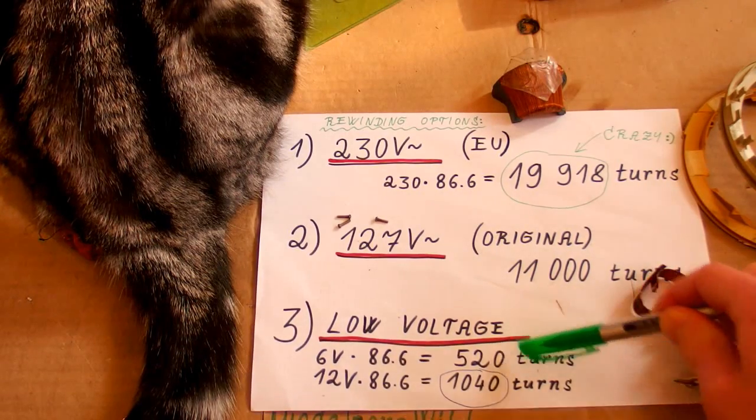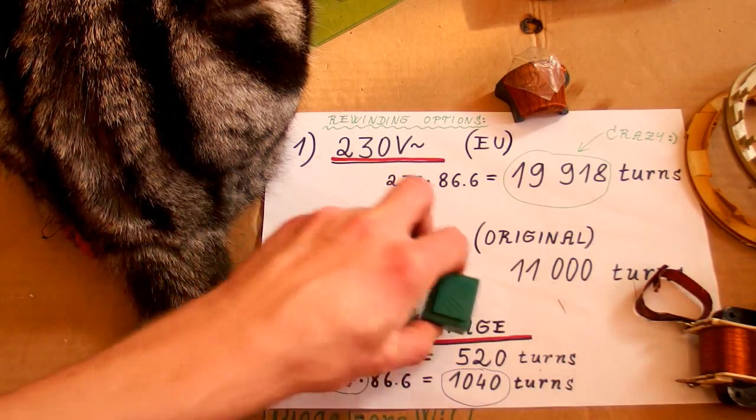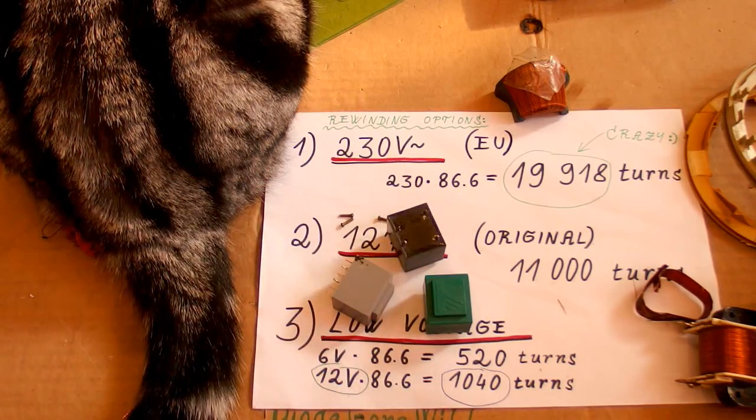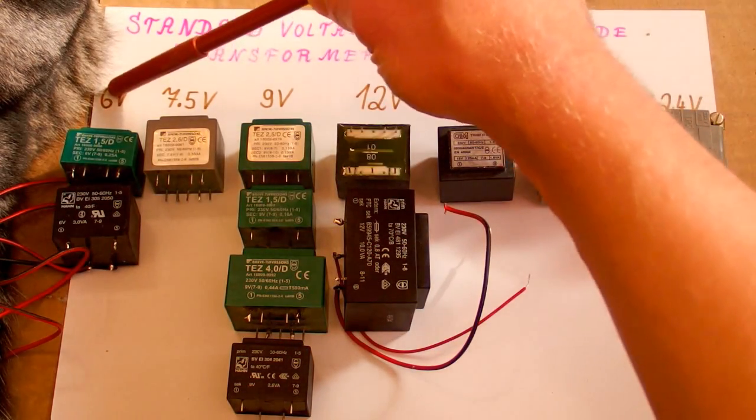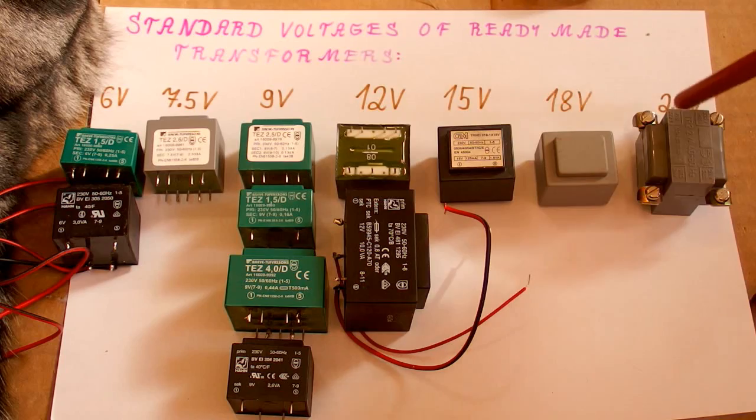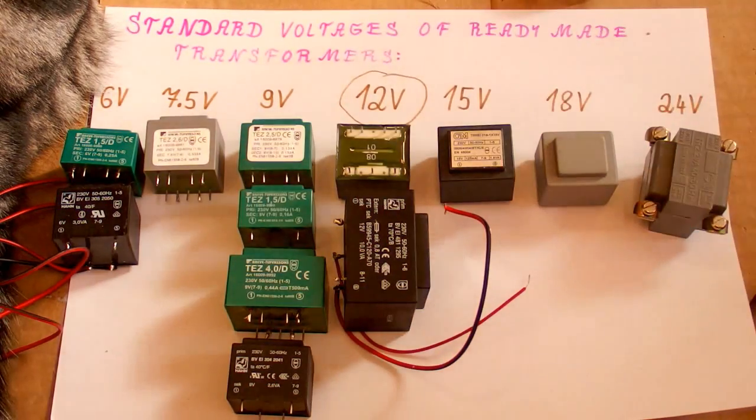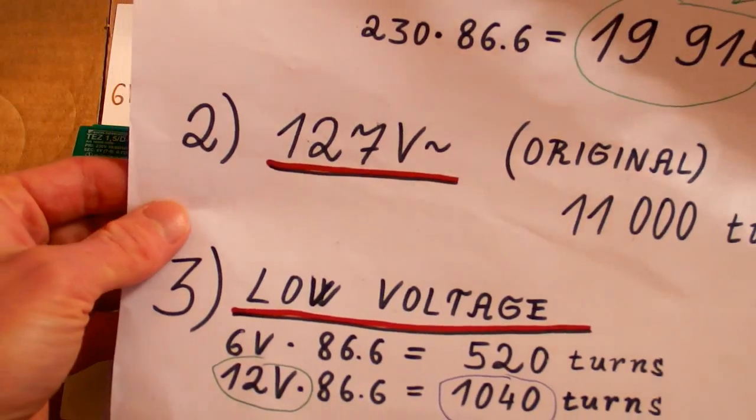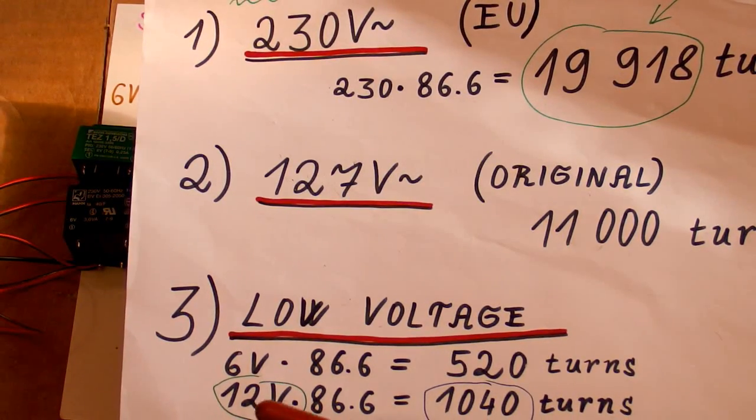So I've decided for low voltage, 12 volts, because then I can run it using a standard safety transformer like this. Those standard ready-made transformers normally come in voltages from 6 to 24 volts, and 12 volts is right in the middle. The original winding has about 86 turns per volt, so based on this I've calculated 1040 turns for 12 volts.